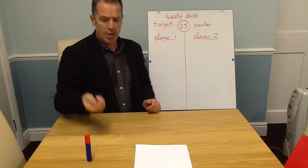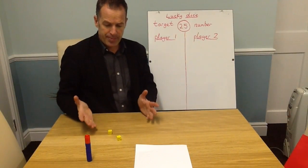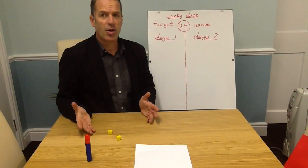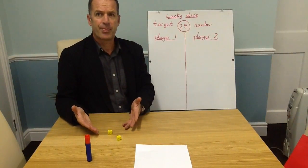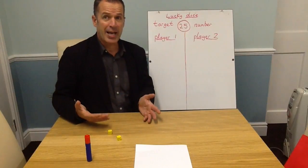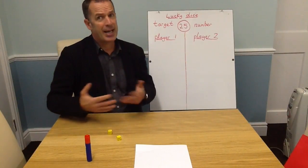The idea of the game is that when it's your turn you're allowed to roll the dice as many times as you like. Each time you roll, you add the two numbers together and put it on your score, then you can roll again and add it to your score and keep going.